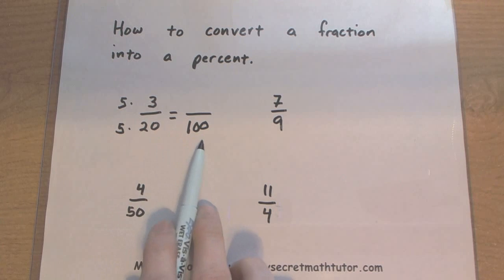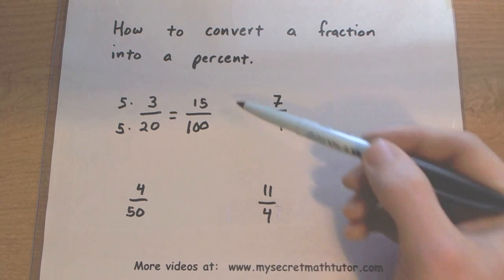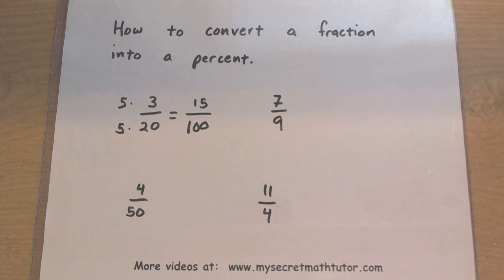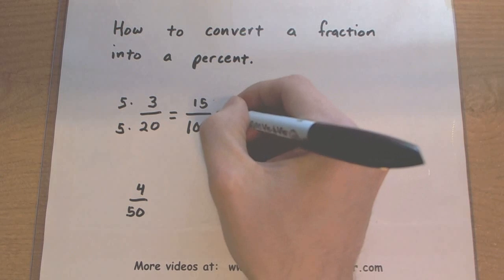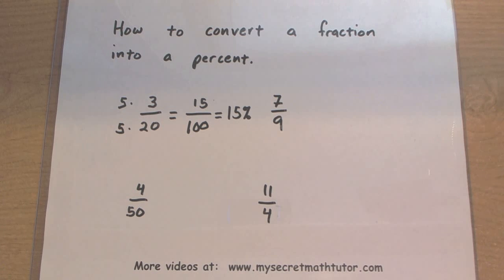So let's see, 5 times 20, 100, looks good. 5 times 3 is 15. So my fraction becomes 15 divided by 100. So this is the same as 15%.